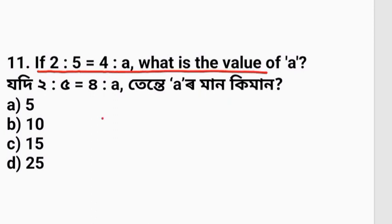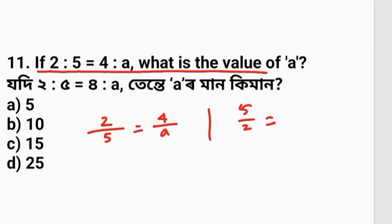To solve this proportion, we rearrange to find a. We get a equals 5 by 2, and then a by 4. We work through the calculation step by step to arrive at the correct answer.